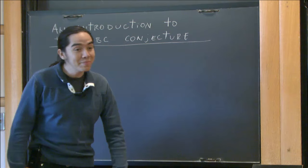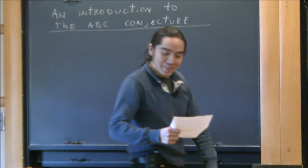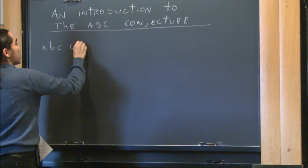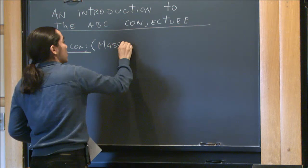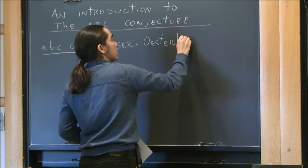Thank you for the invitation to speak here. You have probably heard about this conjecture somewhere during the last years. I'll start with the basics and then discuss some current topics in this subject. Let me first state the conjecture. The ABC conjecture was posed by Masser and Oesterlé around 1985.